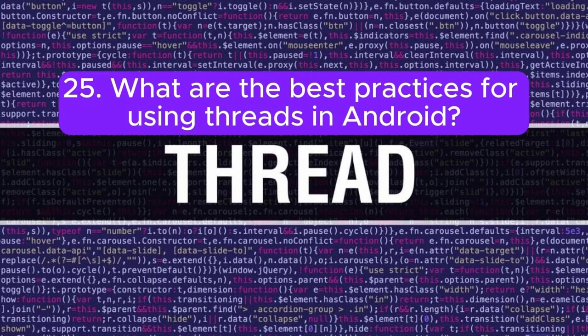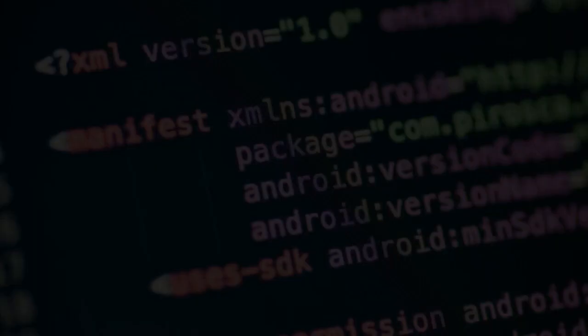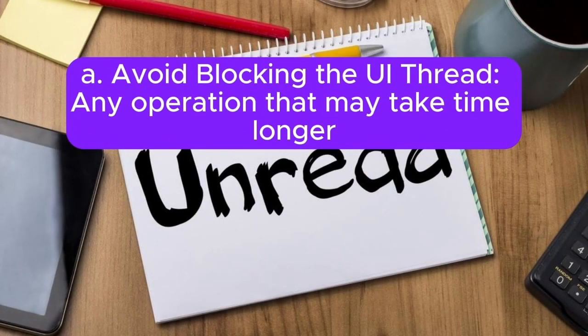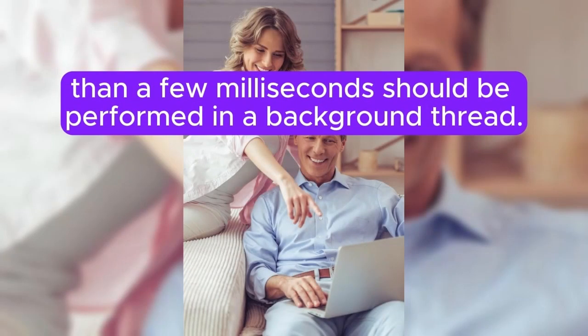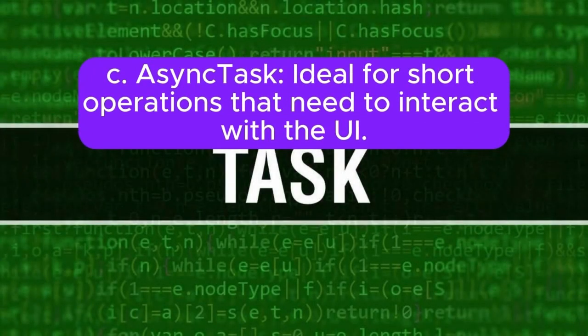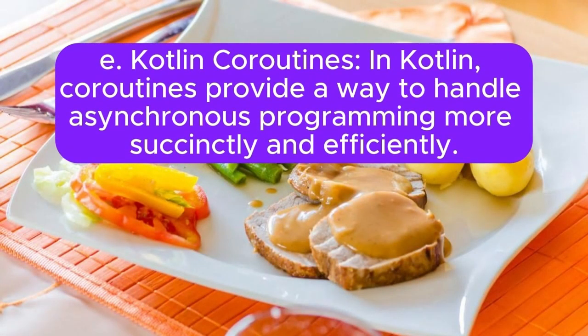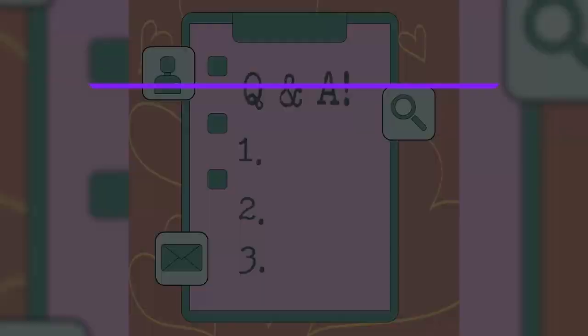Question 25: What are the best practices for using threads in Android? Best practices include: avoid blocking the UI thread — any operation taking more than a few milliseconds should run on a background thread; use Android's HandlerThread for simple background operations that need to update the UI; use AsyncTask for short operations that interact with the UI; use Java's Executor framework for managing a pool of threads; and in Kotlin, use coroutines to handle asynchronous programming more succinctly and efficiently.